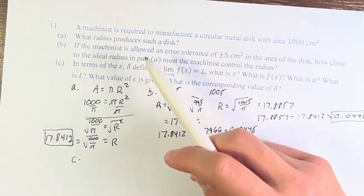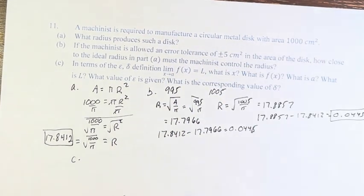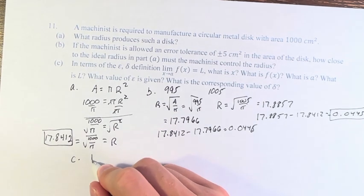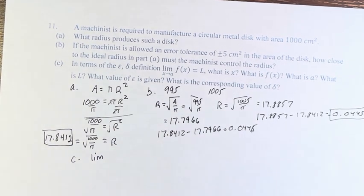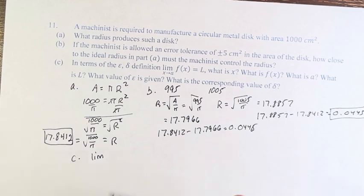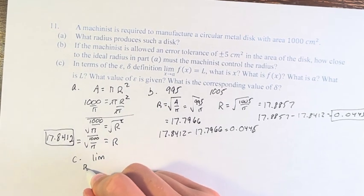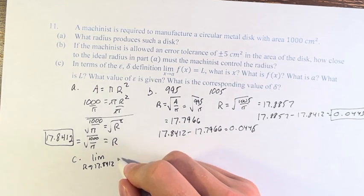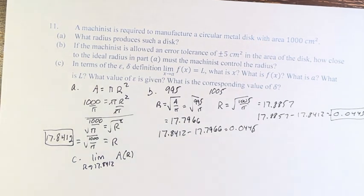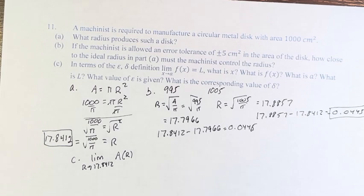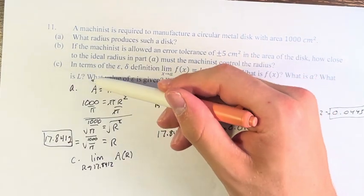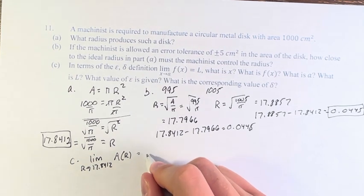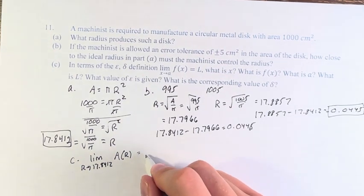So, now we're asked, in terms of the formal definition of the limit, what is x, what is f of x, and so on. So, we have the limit as the radius approaches 17.8412 of the area, which you can say A of R. Because it's A, and it's taking on values of R, not values of x. The area approaches an area of 1,000.